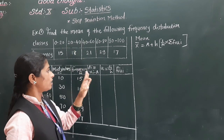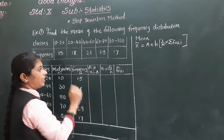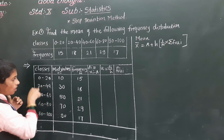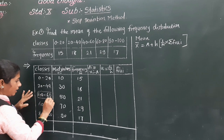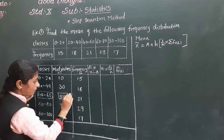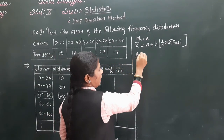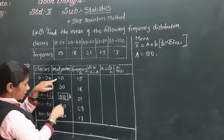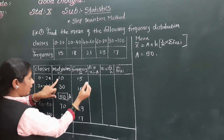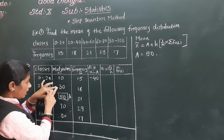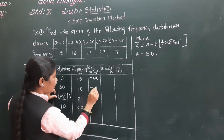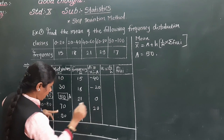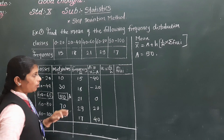Now for the step deviation method we first find di and then ui. To find di, we select one mid value as 'a'. There are 5 class intervals, so we take the middle one — 50 — as our assumed mean. So a equals 50. Now di equals xr minus a. So: 10 minus 50 equals minus 40; 30 minus 50 equals minus 20; 50 minus 50 equals 0; 70 minus 50 equals 20; and 90 minus 50 equals 40.